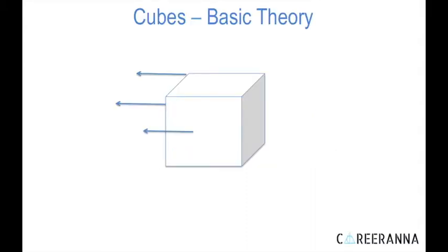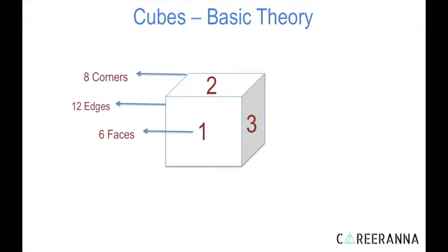Talking about the basic theory of cubes, a cube has six faces. While three of them are visible, the remaining three are hidden. A cube has 12 edges and eight corners. All six faces of a cube are square in shape and all the edges are of similar dimension.